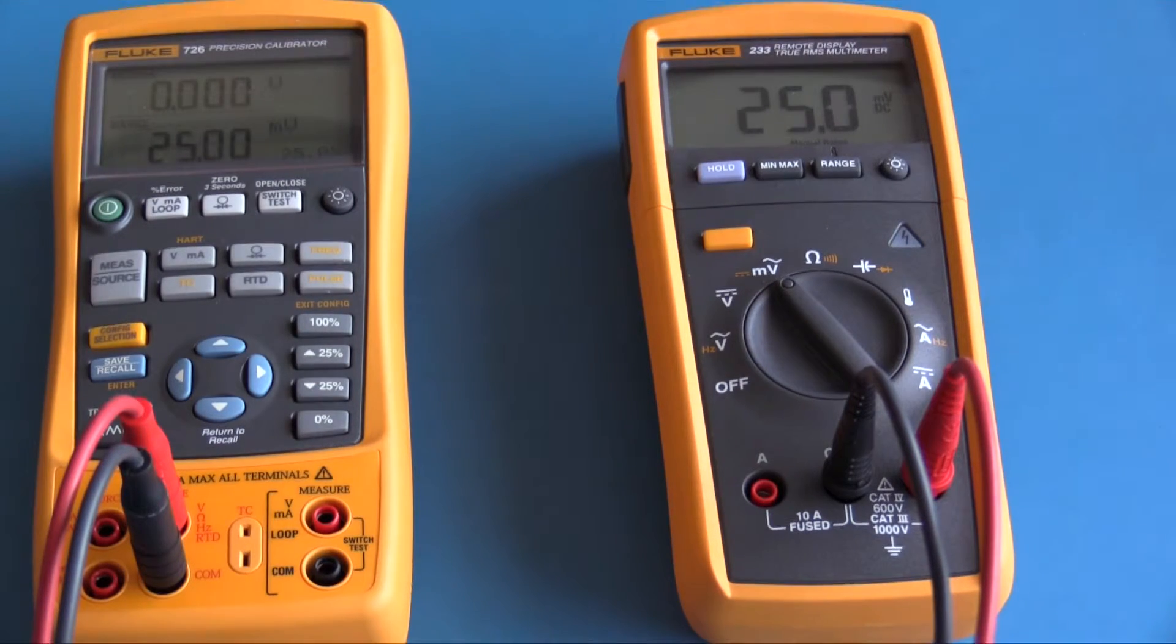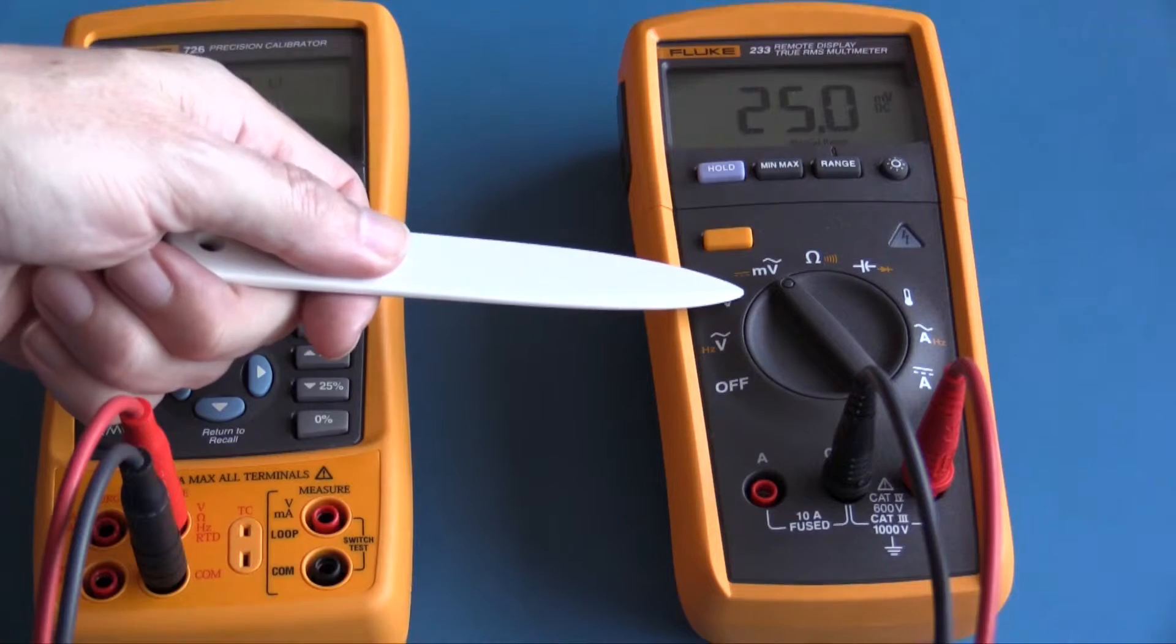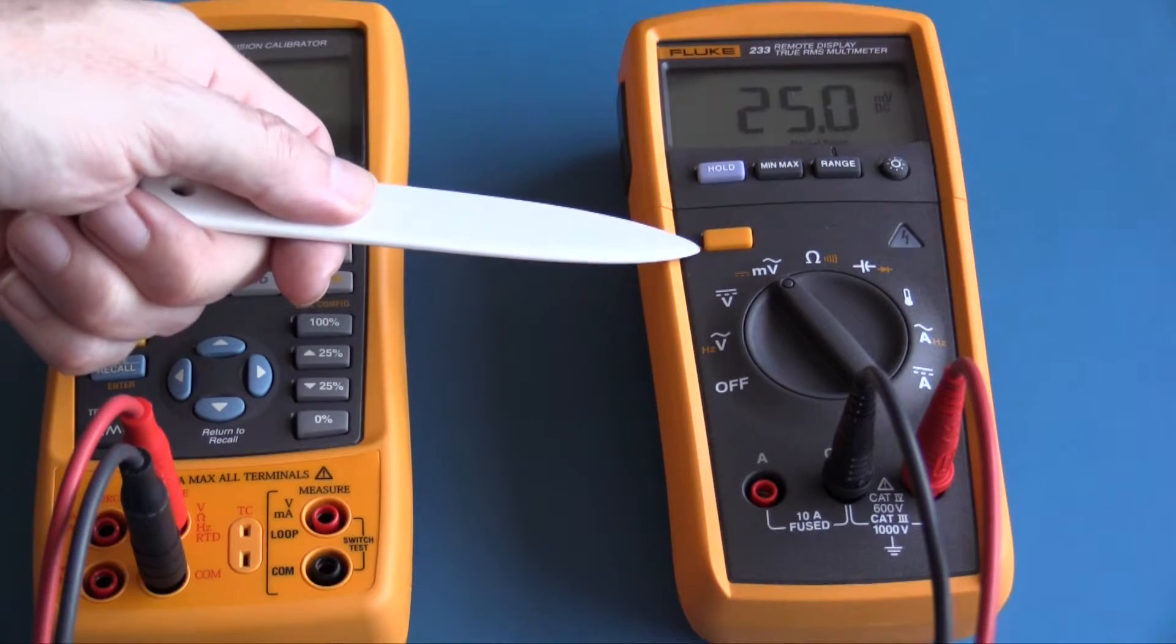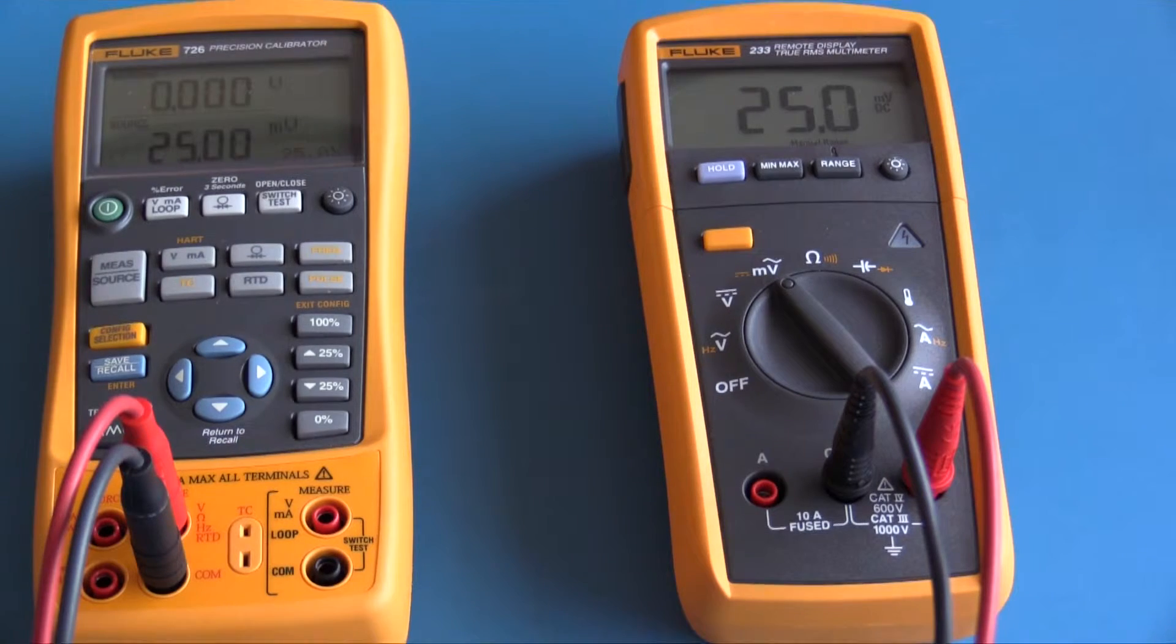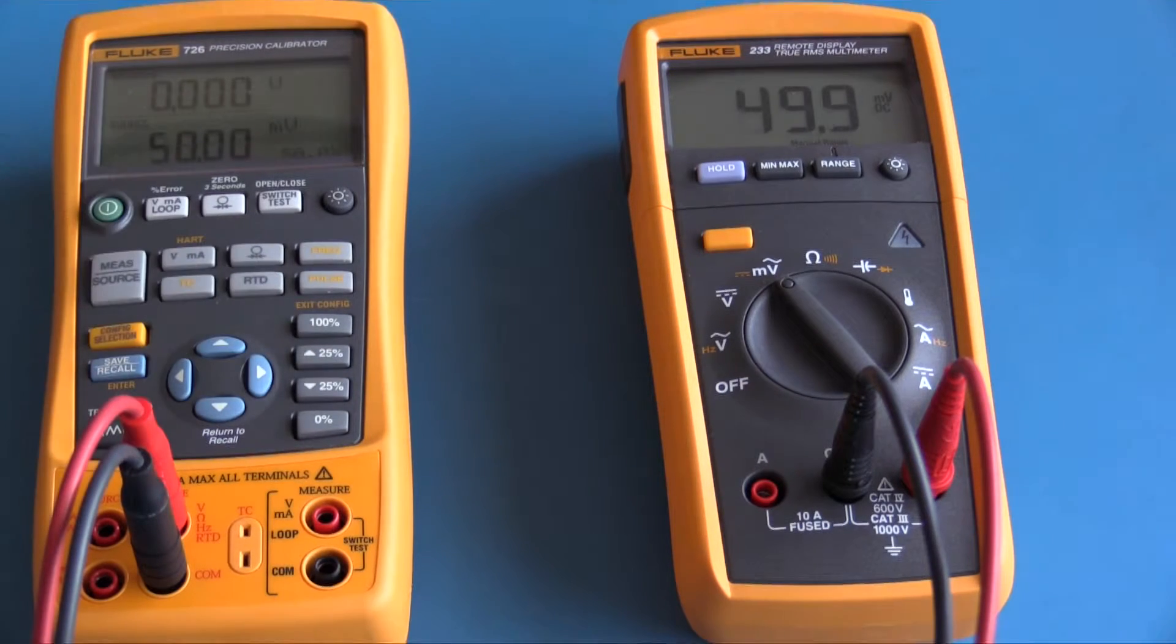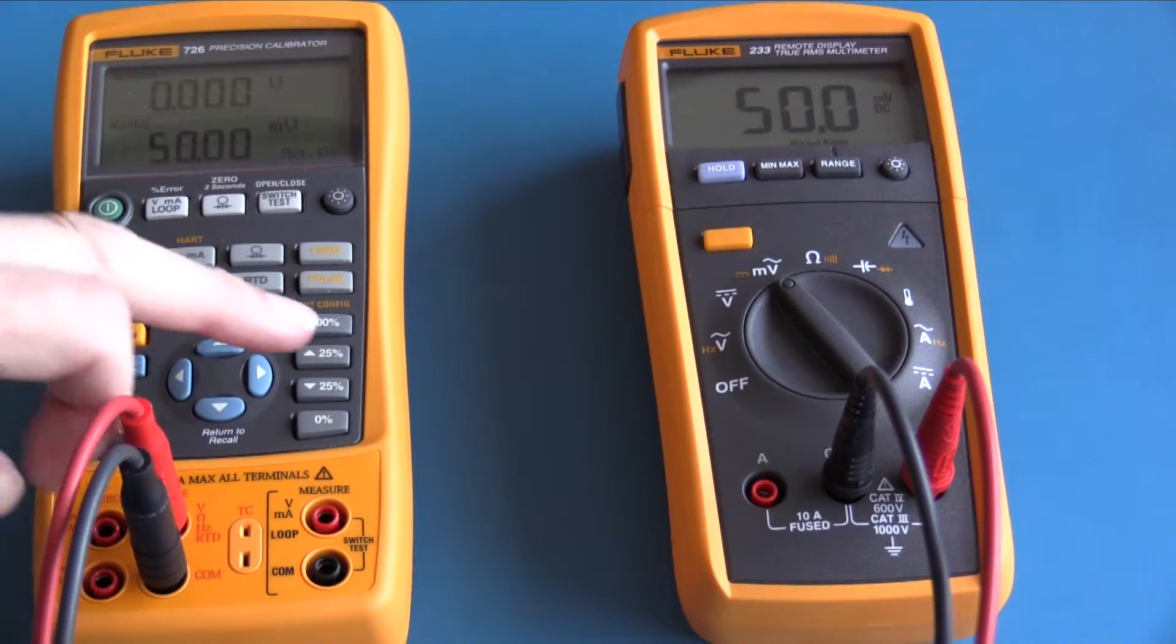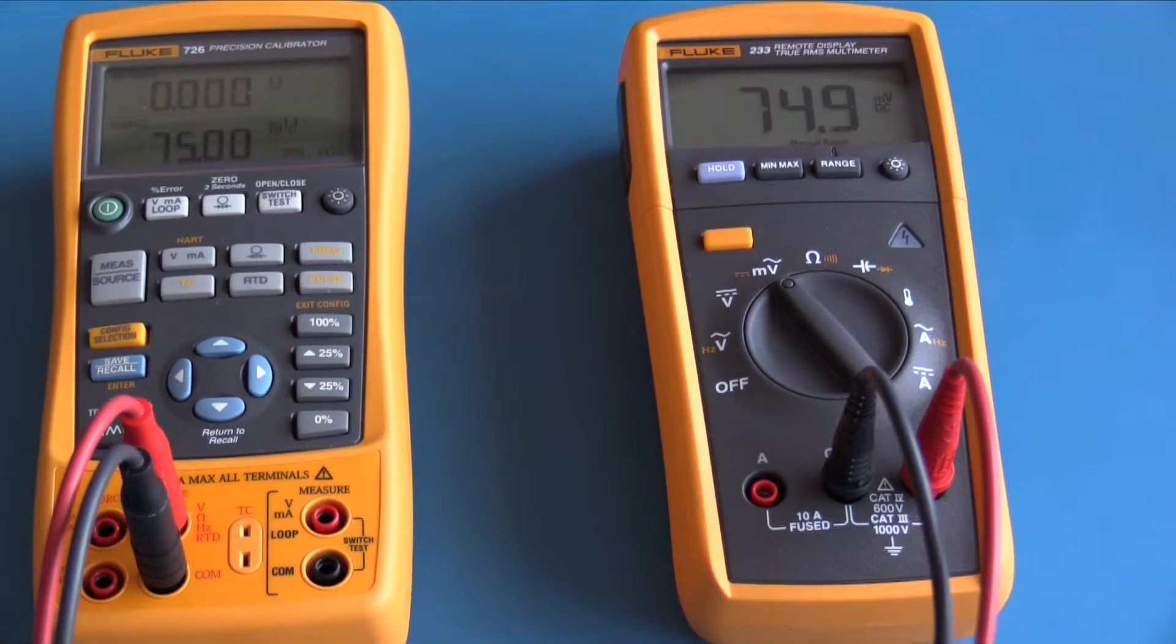I now have the Fluke 233 set to its millivolt range and I have selected the secondary function DC millivolts. The Fluke 726 is set to source an accurate 25 millivolts. The Fluke 233 is showing exactly 25 millivolts. This is 50 millivolts and again the Fluke 233 is showing 50 millivolts. 75 millivolts, very close, and this is 100 millivolts. Although a very basic electrical meter, it's quite accurate.